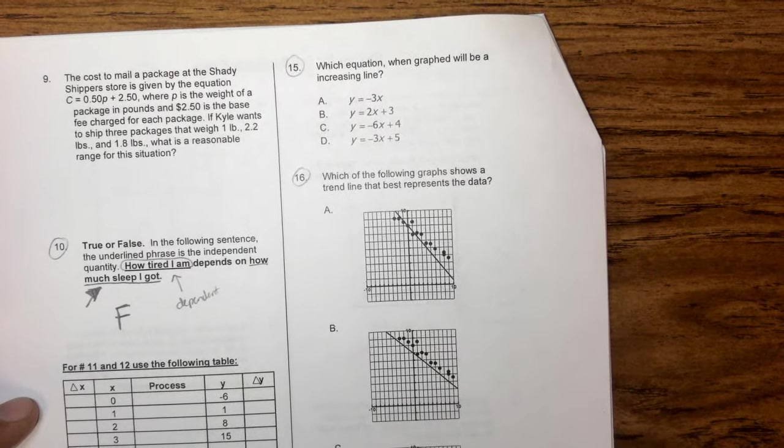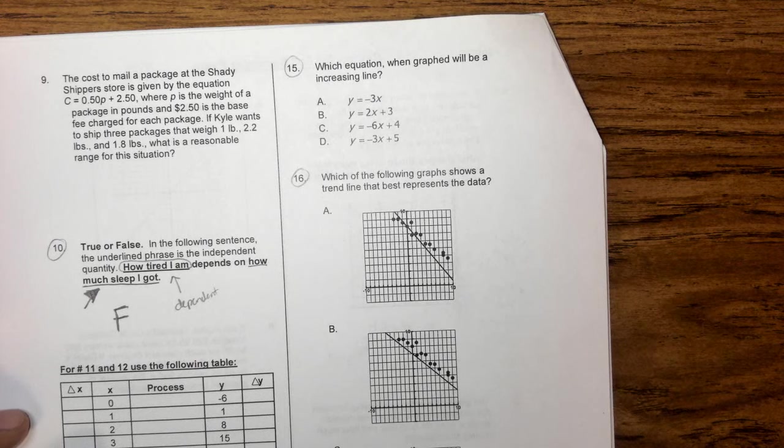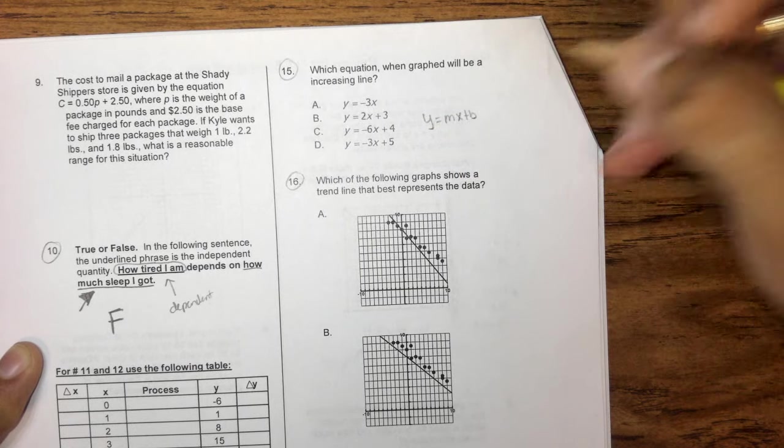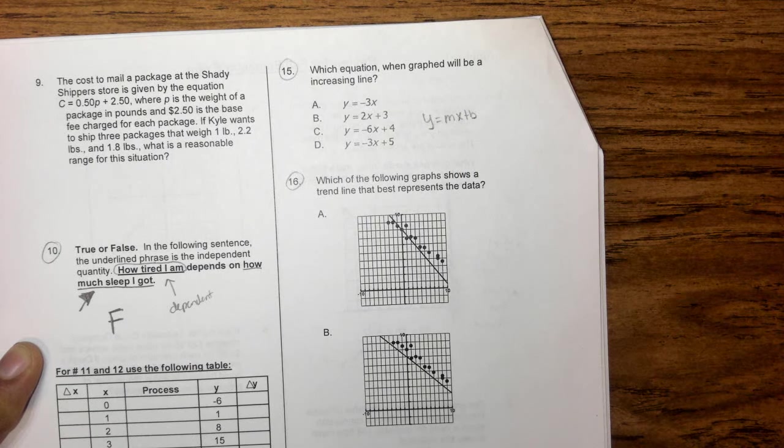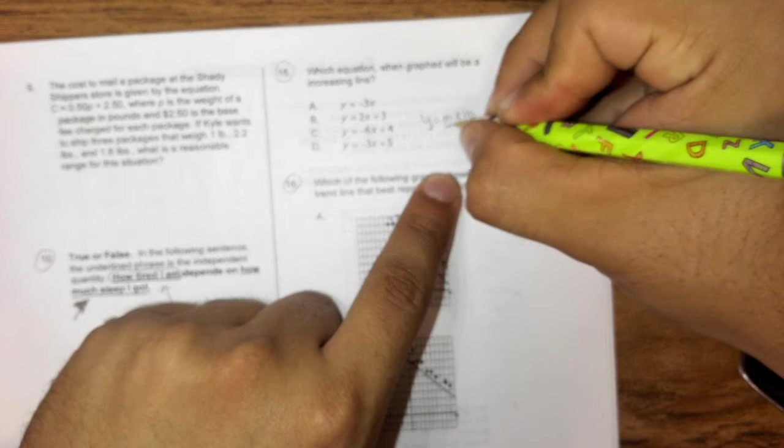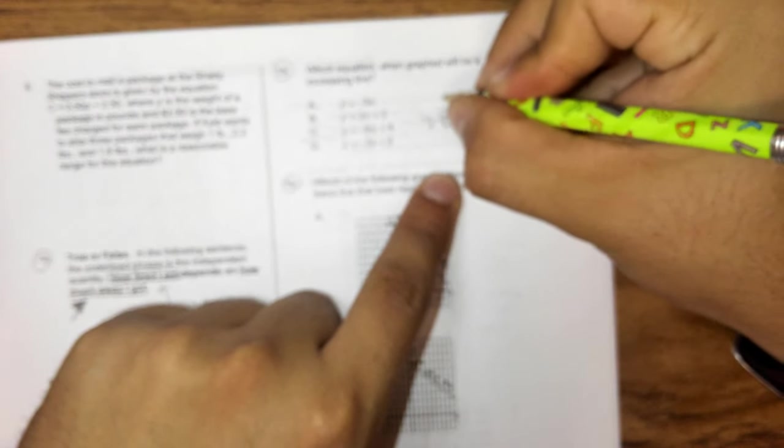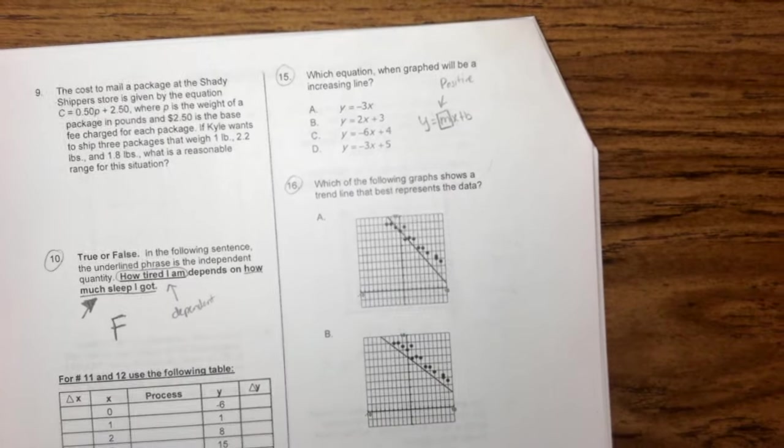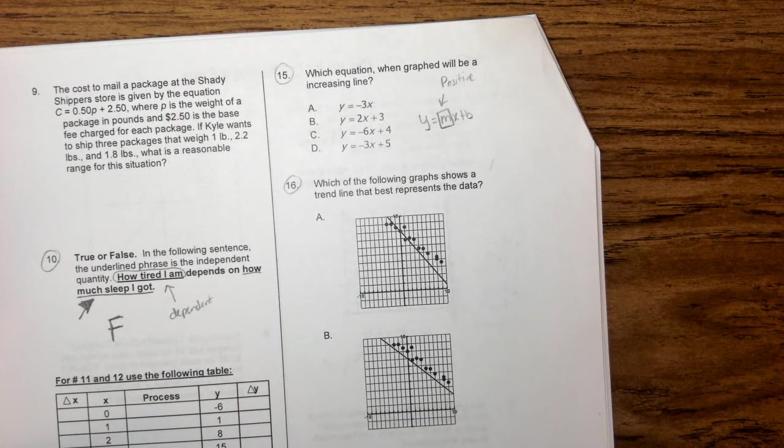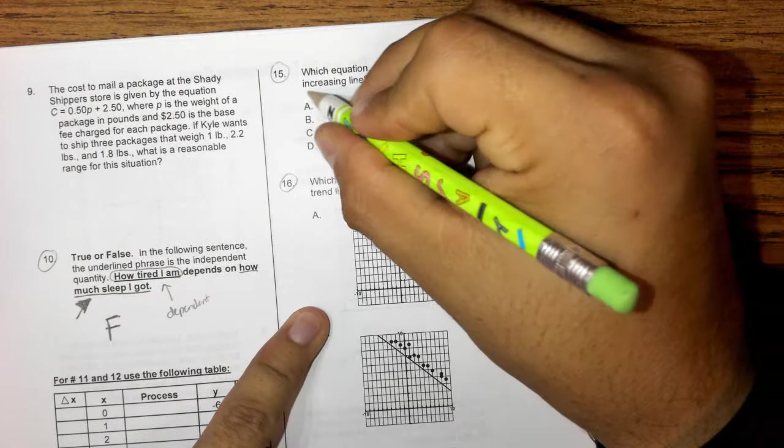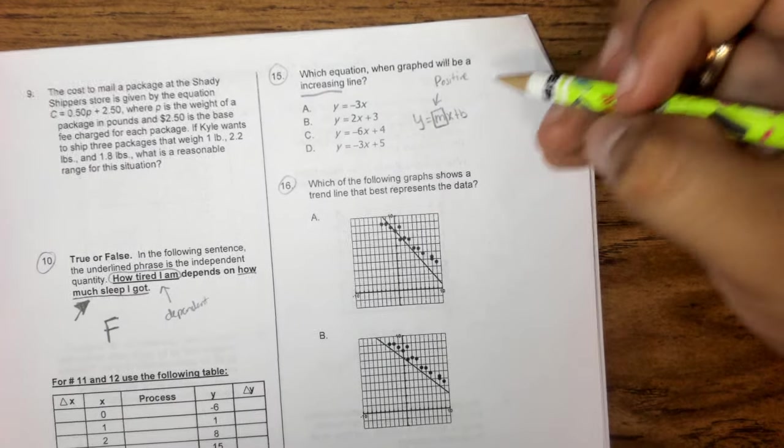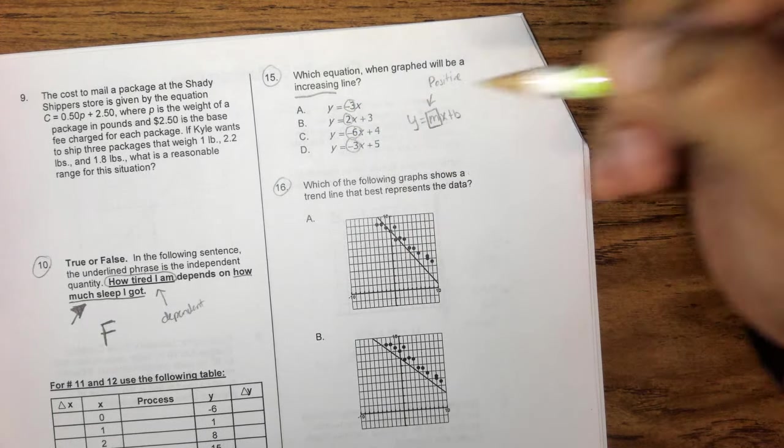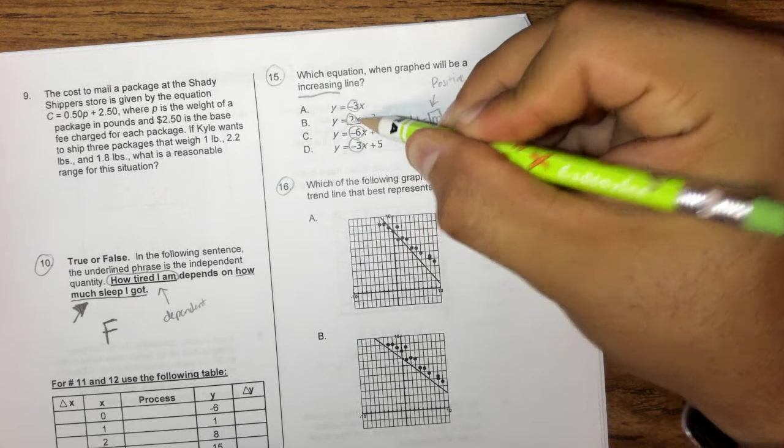Alright, we jump over to 15. Which equation we'll graph will be an increasing line? Once again, we go back to our line, so we have y equals mx plus b. So for a line to be increasing my slope, so an increasing line, my slope just has to be positive. So again, most of these questions are actually relatively easy, or relatively simple. So basically, as long as I have a positive slope, then I have what we consider an increasing line. So the only one that has a positive slope, so I can go ahead and circle all my slopes, the only one that has a positive slope is going to be b, with a positive 2.